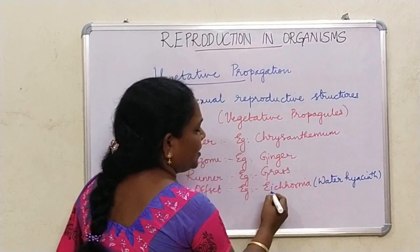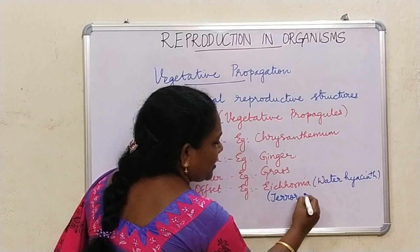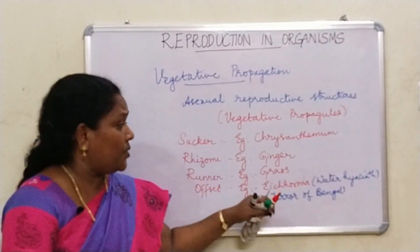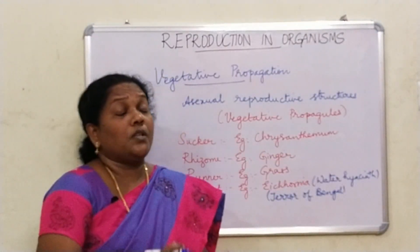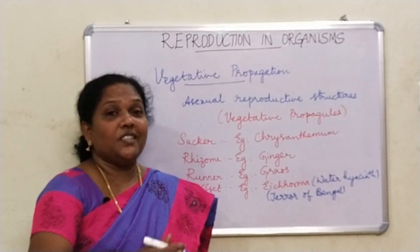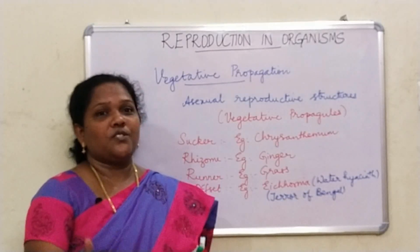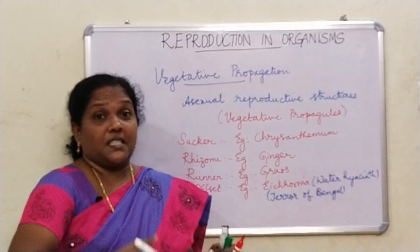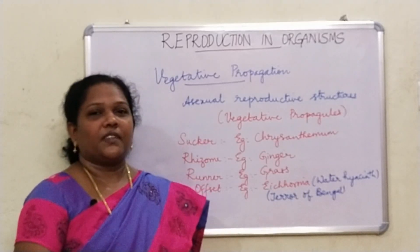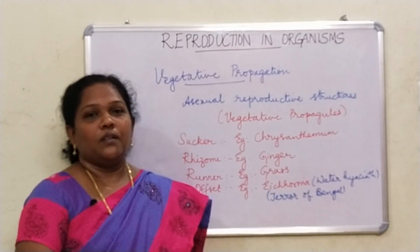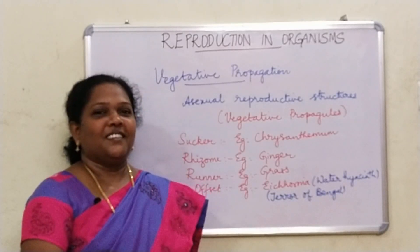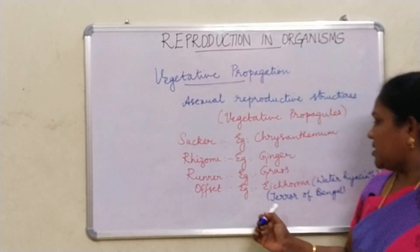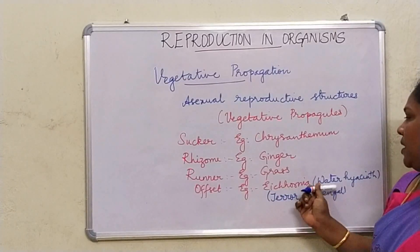One more thing to remember: Water Hyacinth is normally called the 'Terror of Bengal.' Why? This species, Eichornia crassipes, caused severe damage in Bengal. It is an invasive weed — it was introduced for its beautiful flowers and leaves, but it started propagating very rapidly through vegetative propagation. It is normally seen in stagnant water. Because it caused severe damage in Bengal, we use the term Terror of Bengal. Its common name is Water Hyacinth.